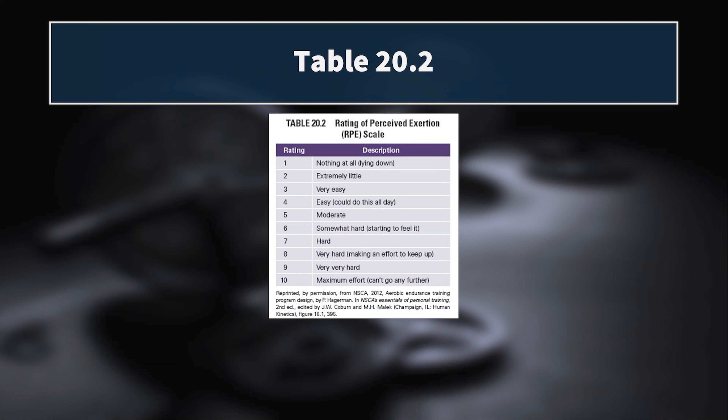RPE can be influenced by external factors like heat, cold, sleep, or recovery status, but over time the trend tends to be fairly consistent for each athlete. The RPE tables tie numerical ratings to qualitative descriptions and are not exactly linear: seven out of ten is 'hard,' with finer gradations up through 'very hard,' 'very very hard,' and 'maximum effort.' Down at four is 'easy,' with gradations below through 'very easy,' 'extremely little,' and 'nothing at all.'